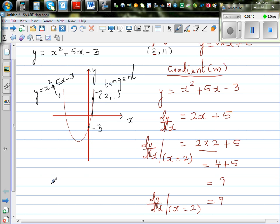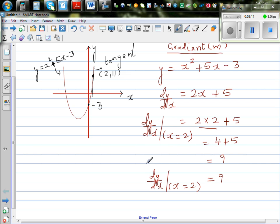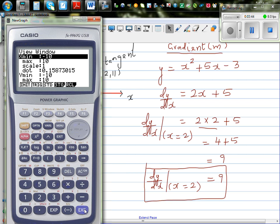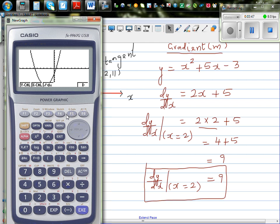So let me show you how you can use a graphic calculator to check your answer. It's always good to check your answer if you have the tool to do it. Let me type in x squared, the equation is x squared plus 5x minus 3. So I have set the scale from minus 10 to 10 and draw it. So g solve, just to show you the point when x is 2, y is 11.